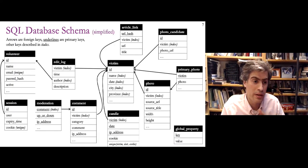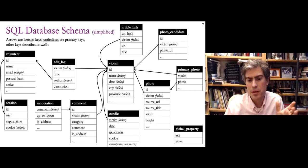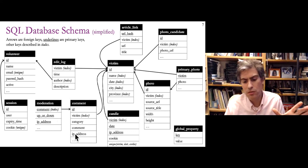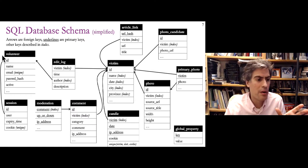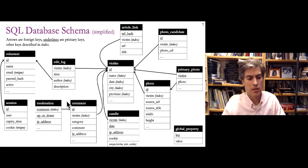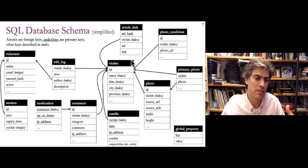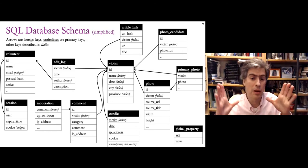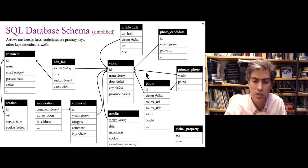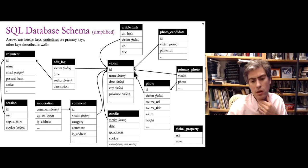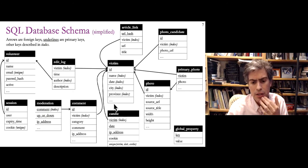The next important thing to discuss is the database schema. This is a simplified version of the actual schema for this system. Each box is a table with the table name at the top in black, and the other items are columns. Every row has a value for each column. The main central table is the victim table — a victim being a person who has lost their life to gun violence and has a page on the system. Each victim row has information like their name, location where they were killed, date, age, and so on.